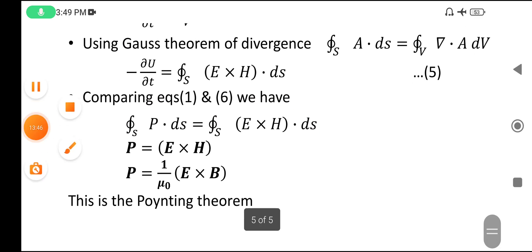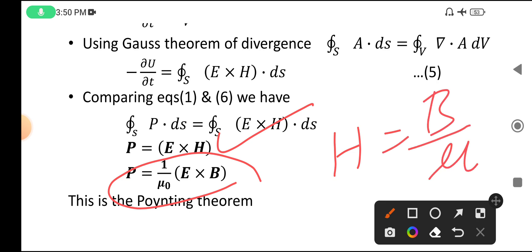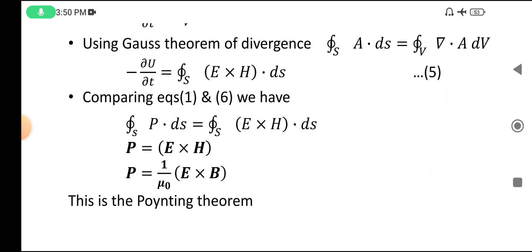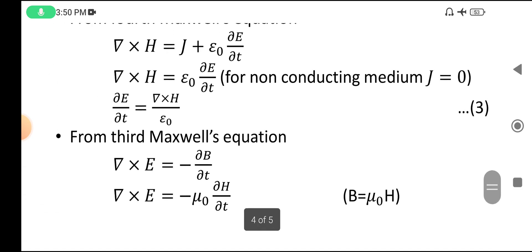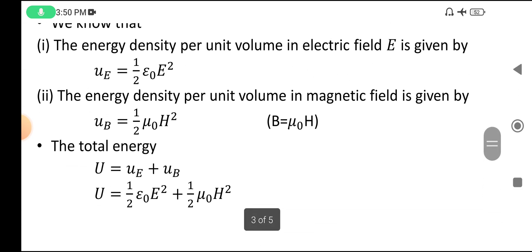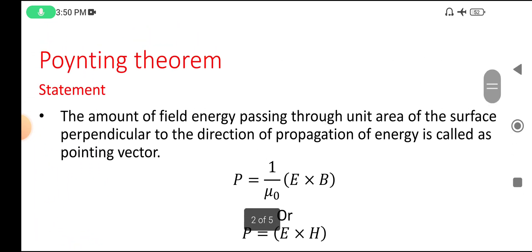Therefore P = E × H, or in terms of B: P = (1/μ₀)(E × B), because H = B/μ₀. This is the Poynting theorem. Go through it slowly, and wherever you didn't understand, stop and listen again. Thank you very much.